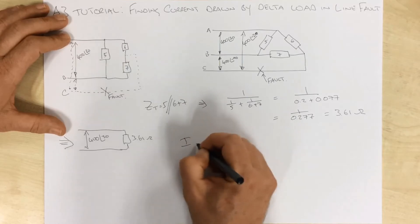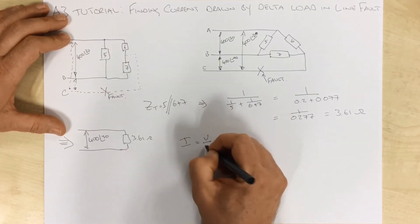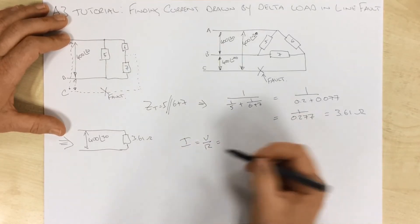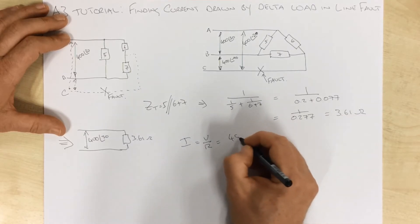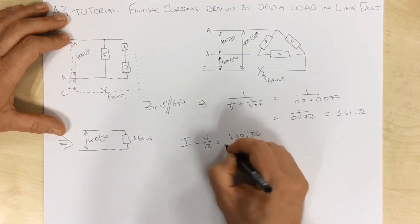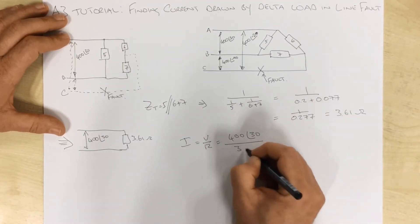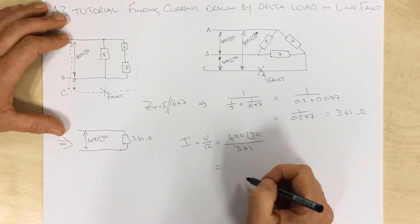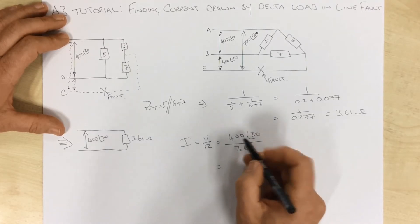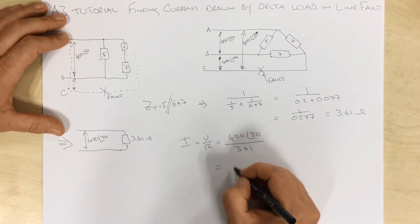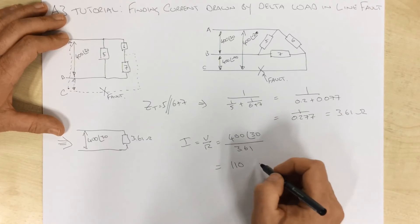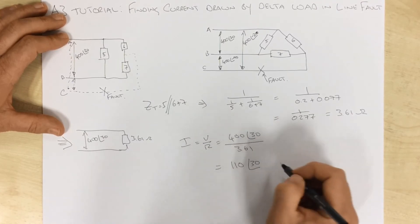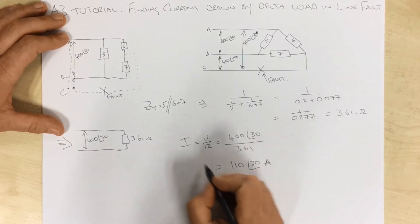Ohm's law, current, tells us it's voltage over resistance: 400 at 30 over 3.61, gives us a total current drawn of 400 divided by 3.61, 110 at an angle of 30. And so that's our solution.